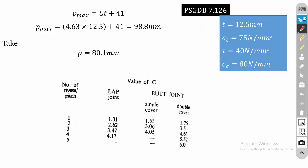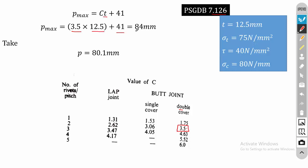We also check the maximum pitch per Indian Boiler Standard: p_max = c × t + 41 mm. For a double cover butt joint with i = 2, the constant c = 3.5. So p_max = 3.5 × 12.5 + 41 = 84 mm. The calculated pitch of 80.1 mm is less than 84 mm, so we adopt p = 80.1 mm.